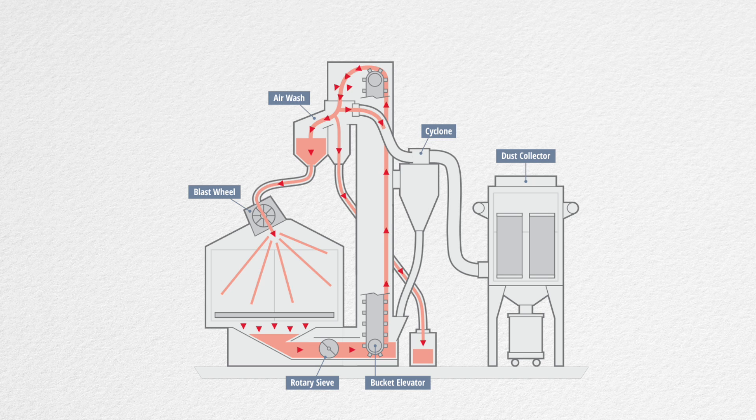At the same time, the fines are pulled into the cyclone, which separates usable media from the dust collector. Reusable media fall back to the base of the bucket elevator to be sent through the reclaimed system one more time for good measure.